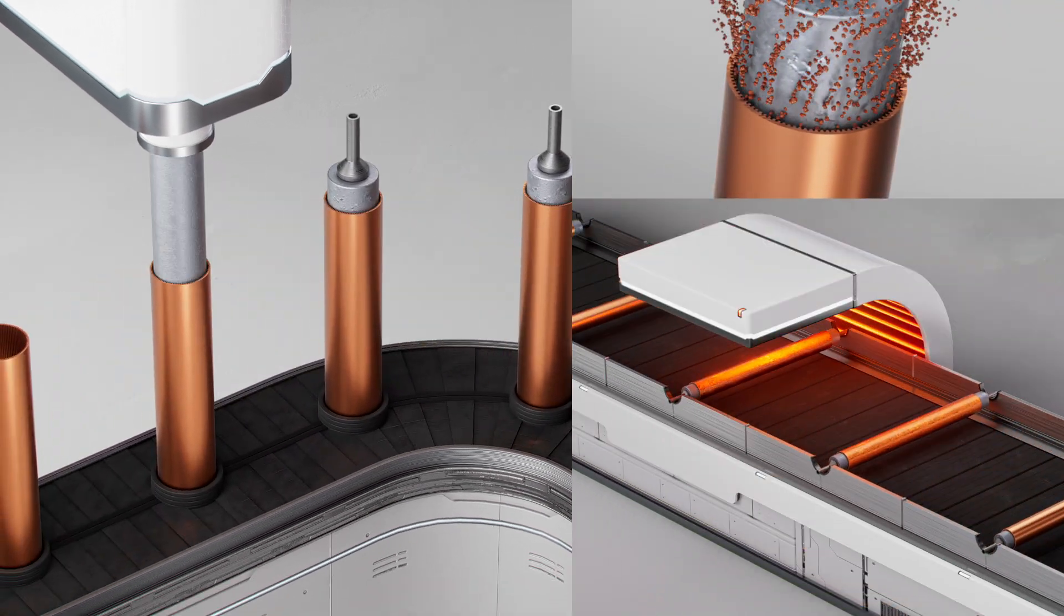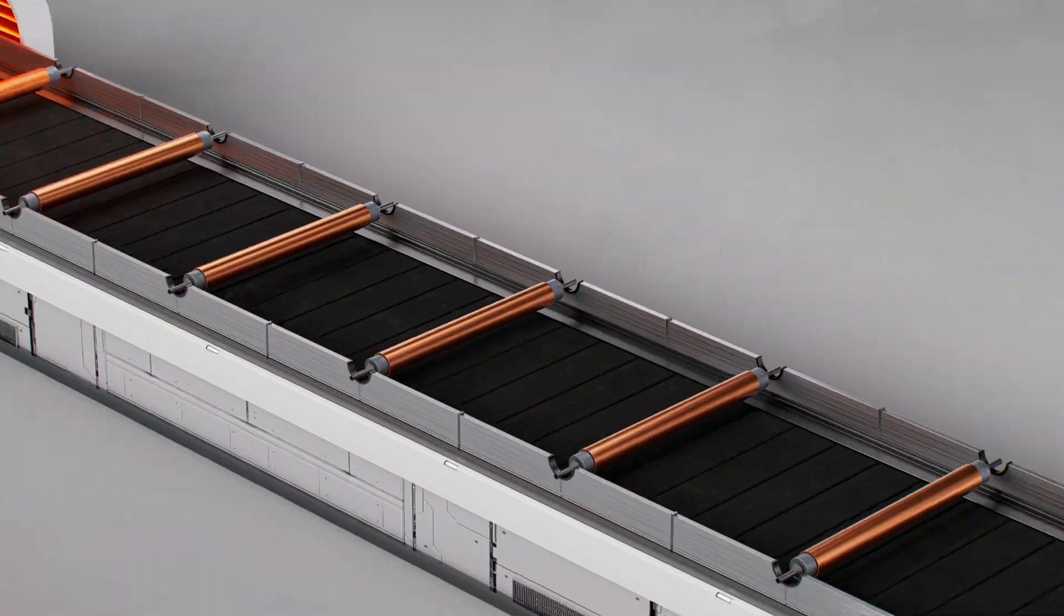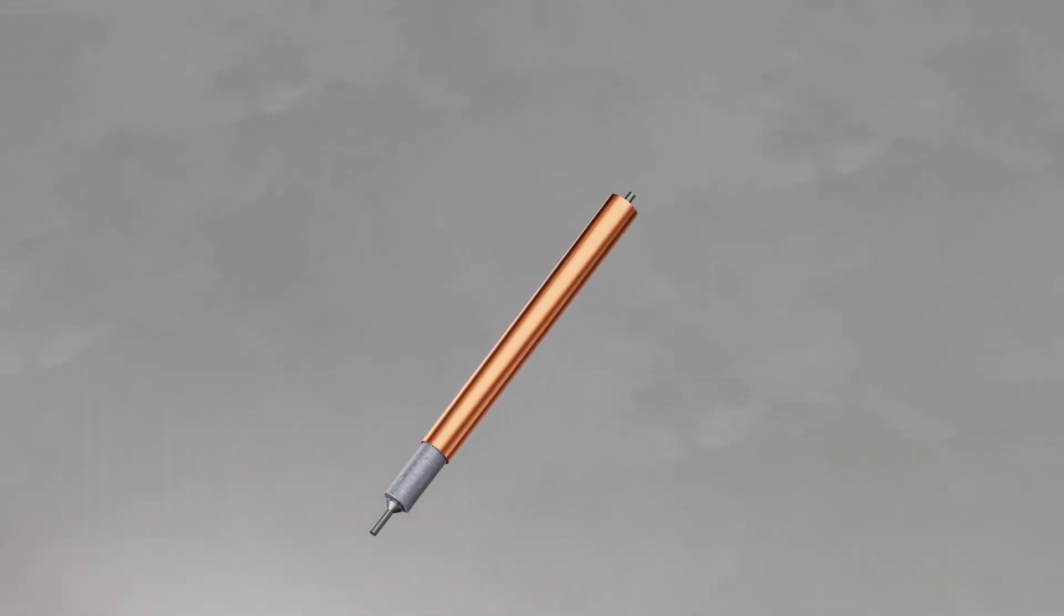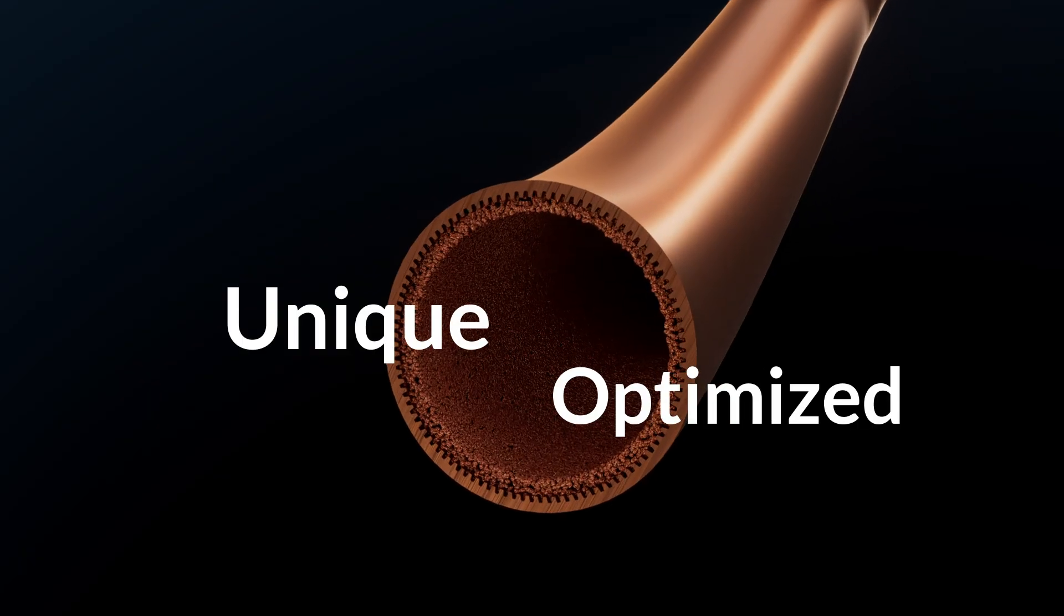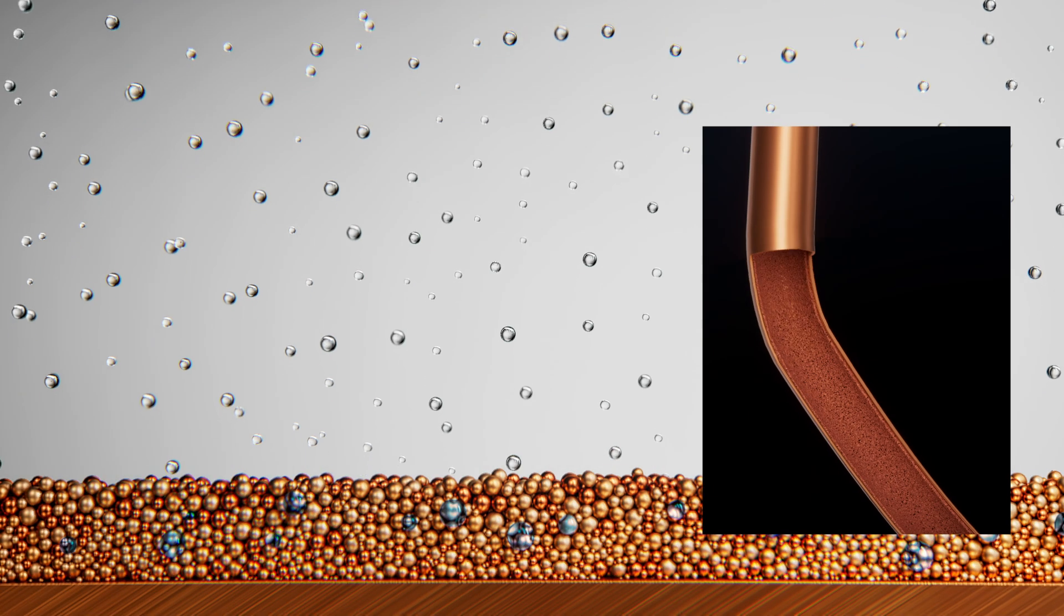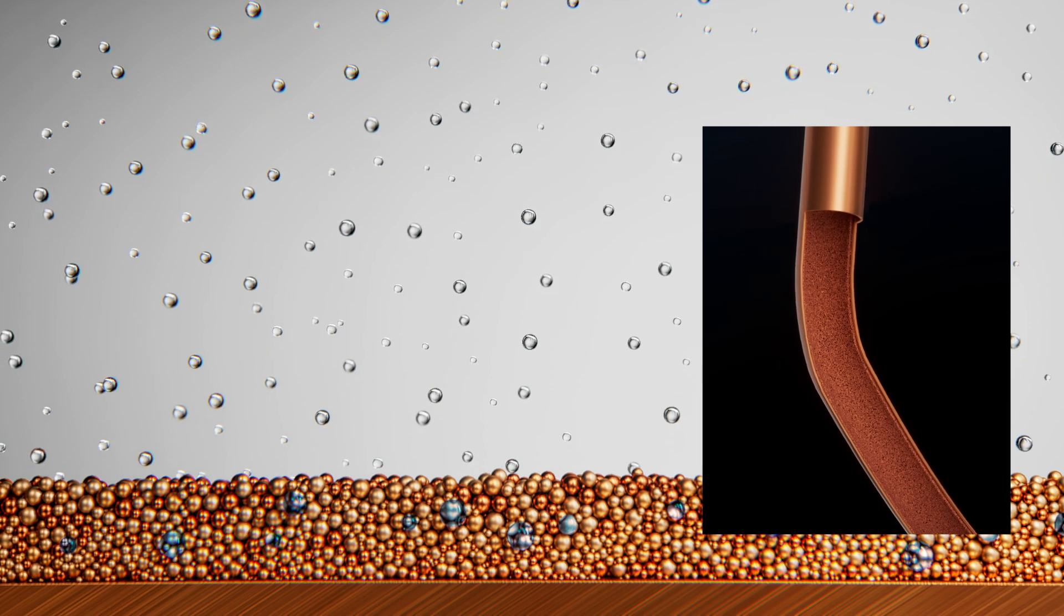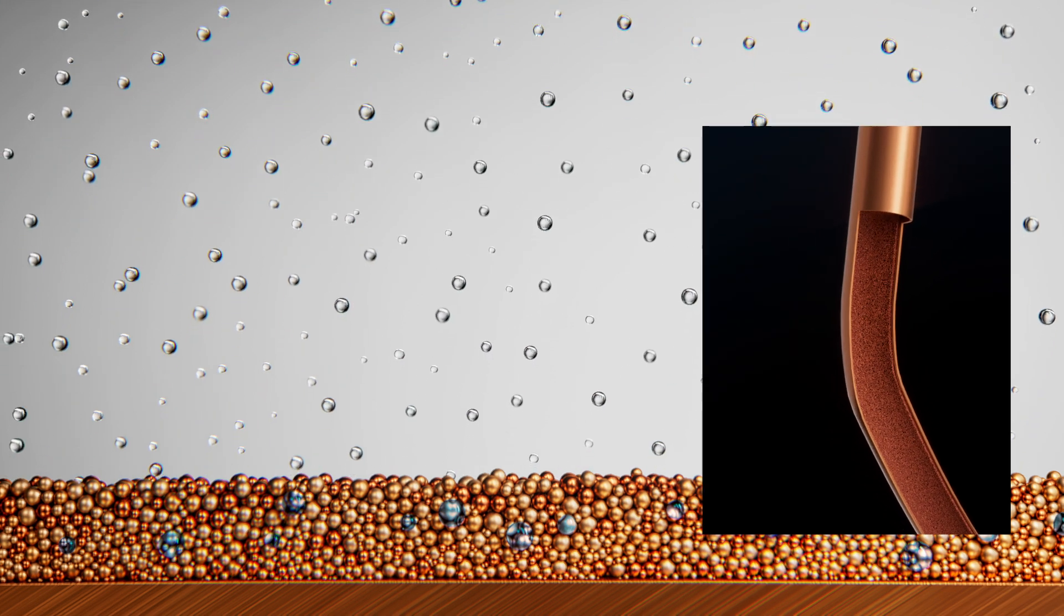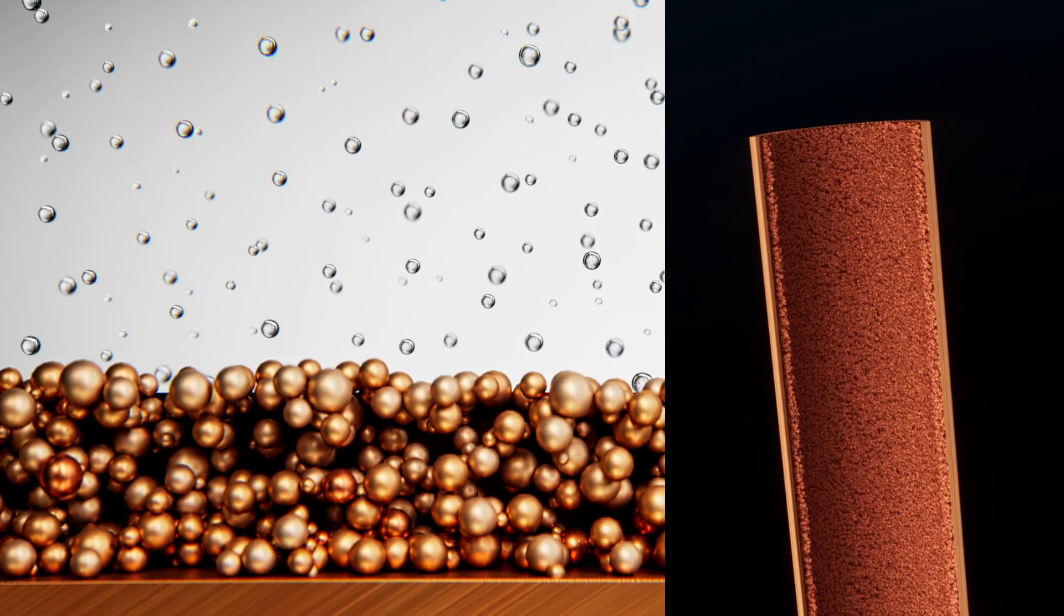How do these next-gen heat pipes work? To speed up evaporation and condensation, we have developed a unique, optimized copper powder formula. We have implemented a finer powder to support evaporation, and a coarser powder to support condensation.